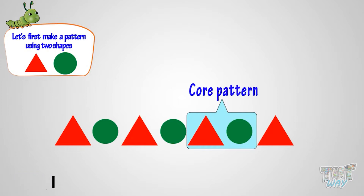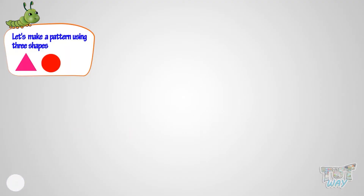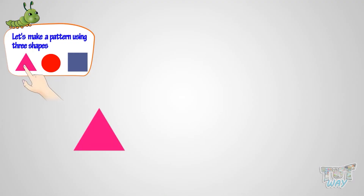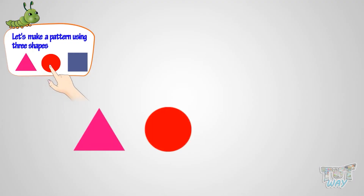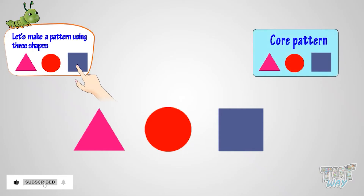Now let's make another pattern. We will use three shapes here: a triangle, a circle, and a square. Let's make a pattern — first a triangle, then a circle, then a square. Is it looking nice?